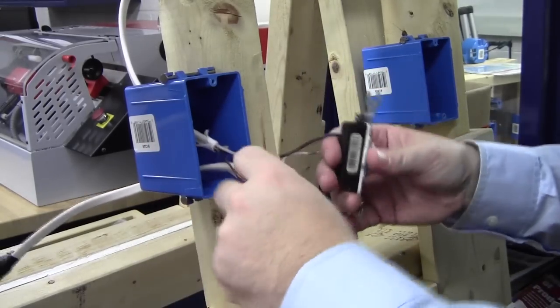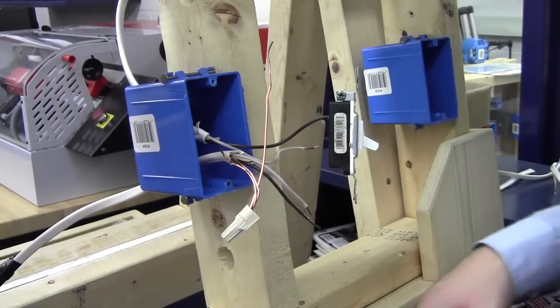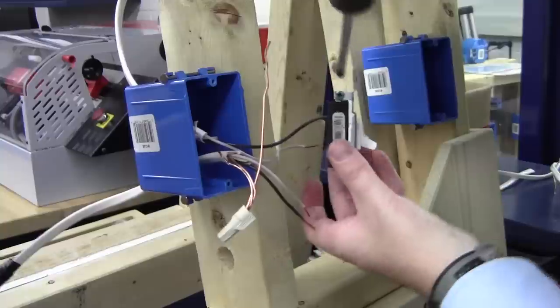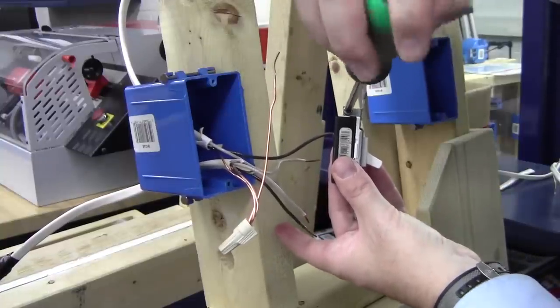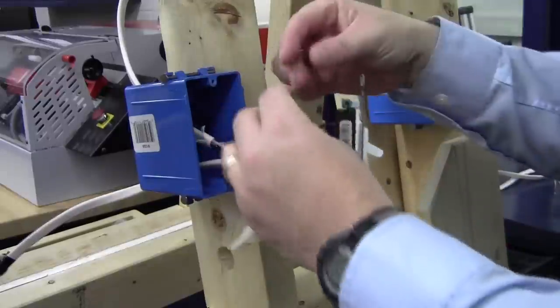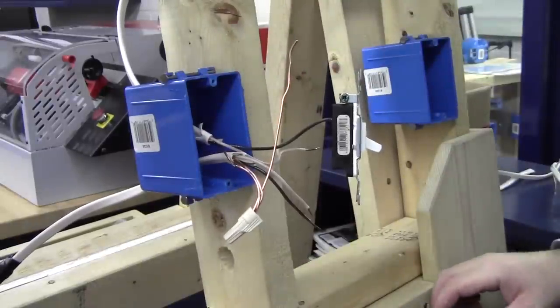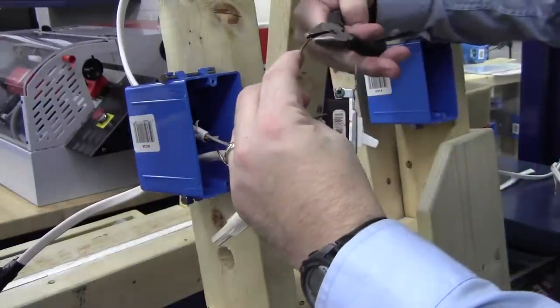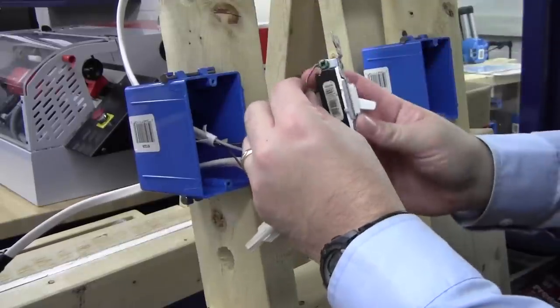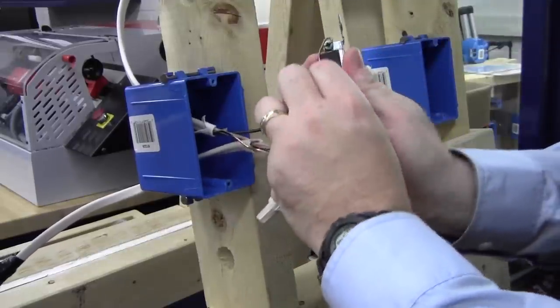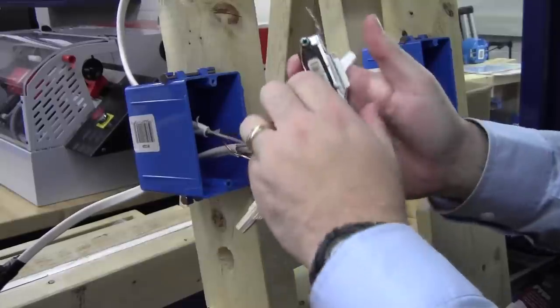Now, in order to connect this to our post, all we have to do is loosen up this ground screw with the appropriate screwdriver. Take our pigtail, put a little hook on the end. Remember, we want this going to the right, around the left side of the screw, so it's hooking over to the right.